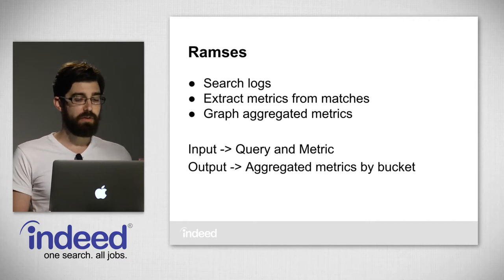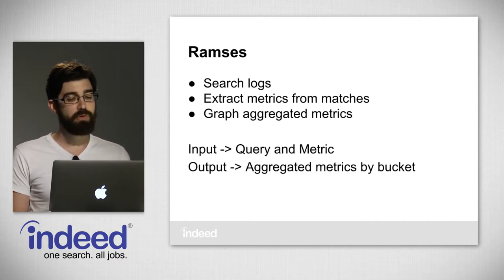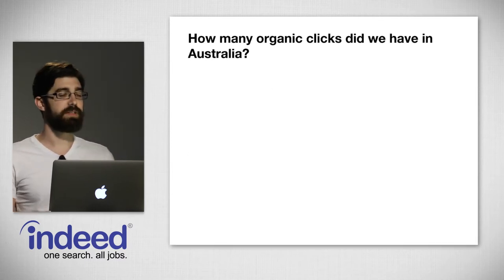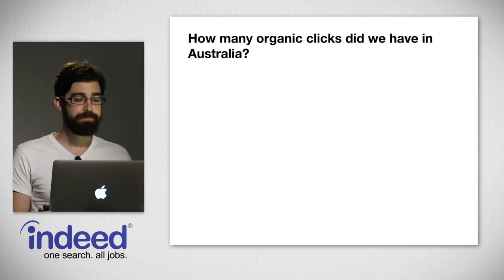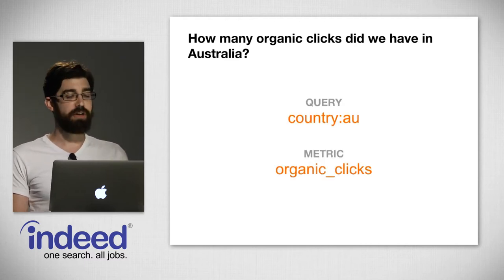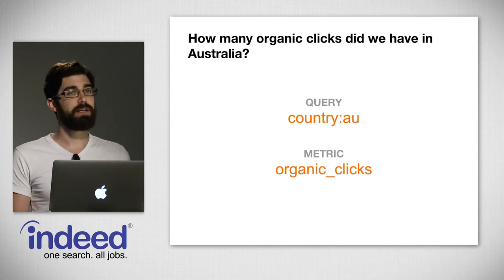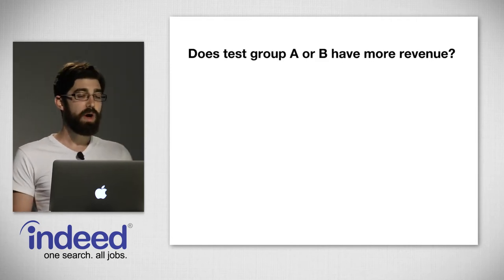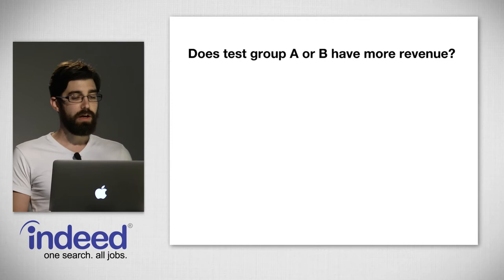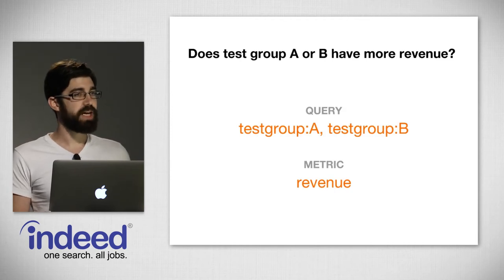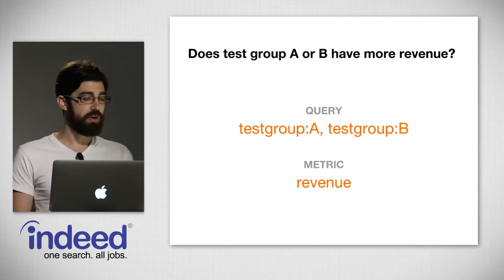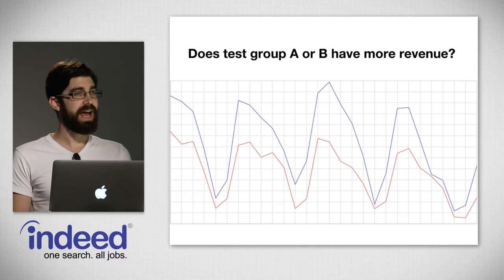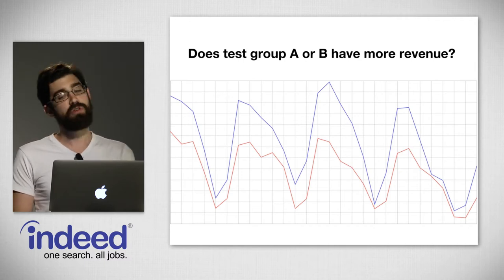The way we'd get information out of Ramses was by putting in a query and a metric we wanted, and it would output aggregated metrics by bucket. For example, to know how many organic clicks we have in Australia, we'd put in the query 'country Australia' and ask for the metric 'organic clicks,' and it would return a result. To know which test group A or B has more revenue, we'd put in the query 'test group A, test group B' and the metric 'revenue,' and it would graph it.